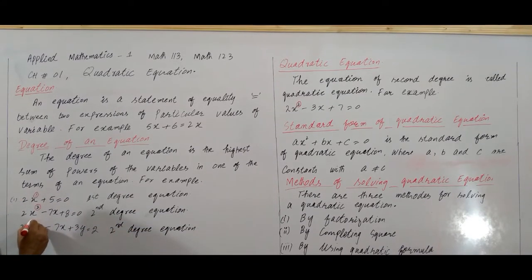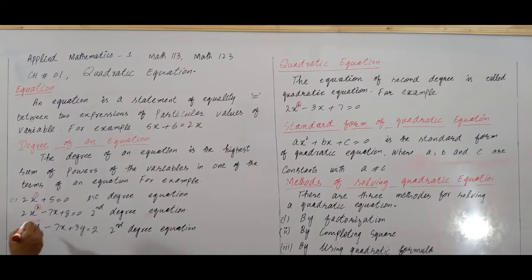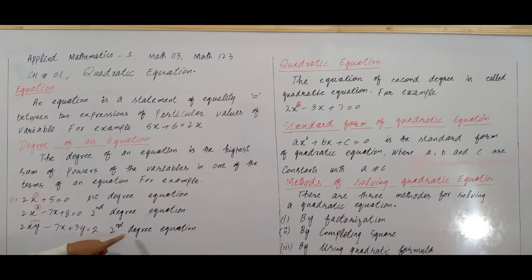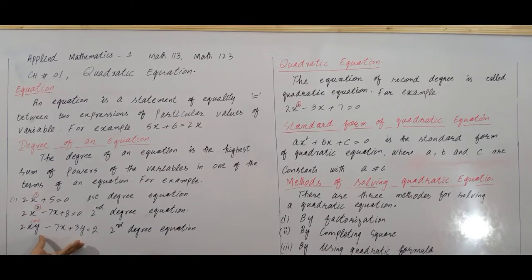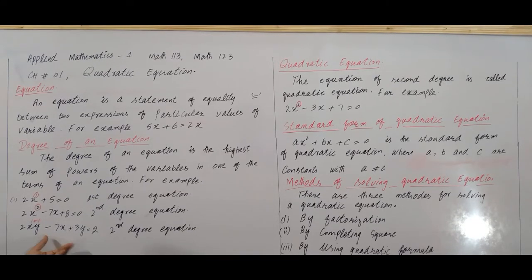Here we have two variables, x and y. The power of x is 1 and the power of y is 1. You need to find the sum of both: 1 plus 1 equals 2. So this is a second degree equation. In summary, the degree is the highest power in any term. If there is a single variable, its highest power is the degree. If there are two variables, you sum the powers of both variables, and the highest sum is the degree.